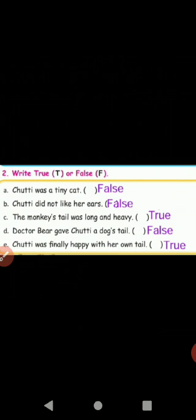Third — the monkey's tail was long and heavy. Answer: true. Fourth — Dr. Bear gave Chutty a dog's tail. Answer: false. Fifth — Chutty was finally happy with her own tail. Answer: true, T-R-U-E.